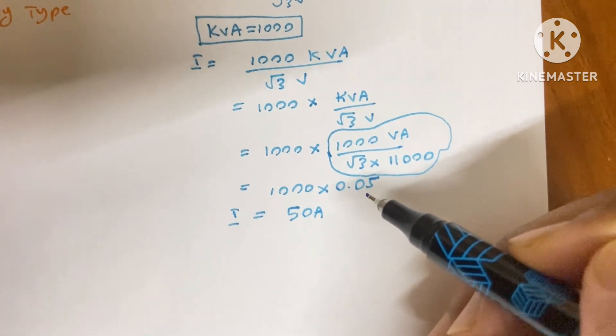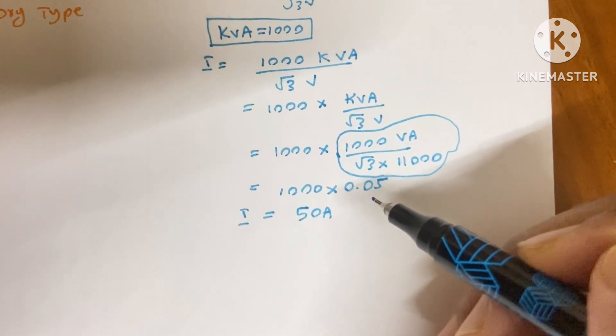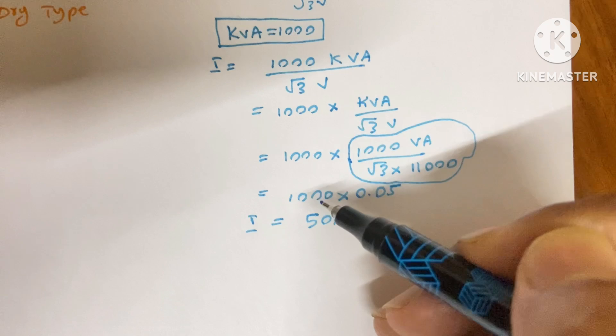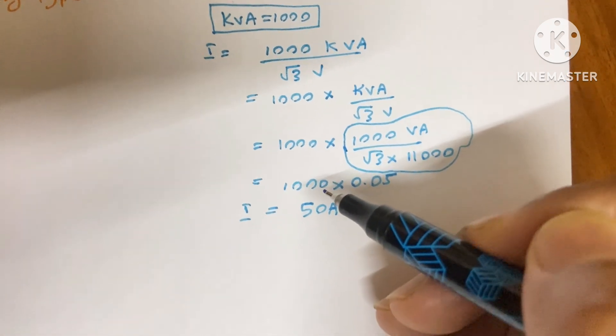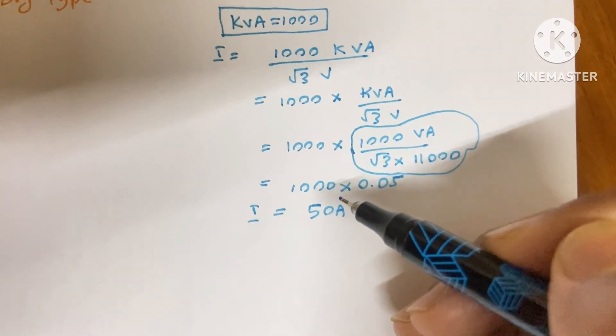Then you need to derive a value just like this and then you need to remember that value always. Then whenever you require, then you only need to multiply that value with the kVA rating of the transformer. It will be very useful for the interviews.